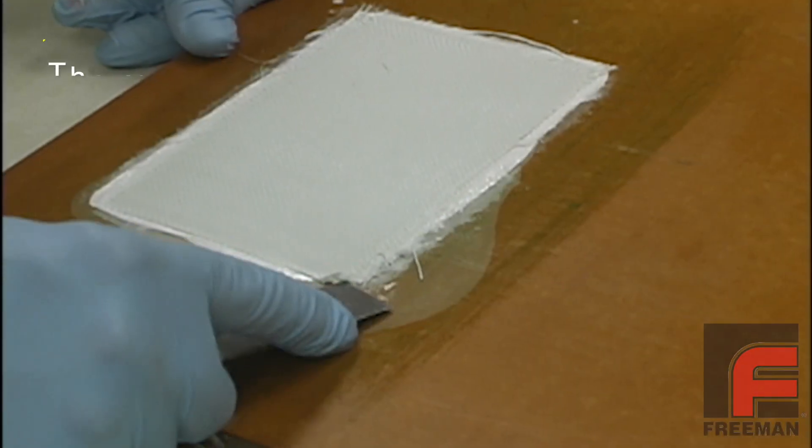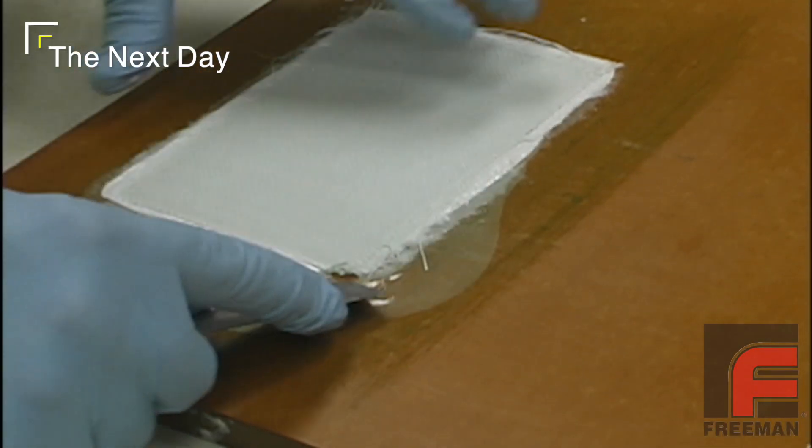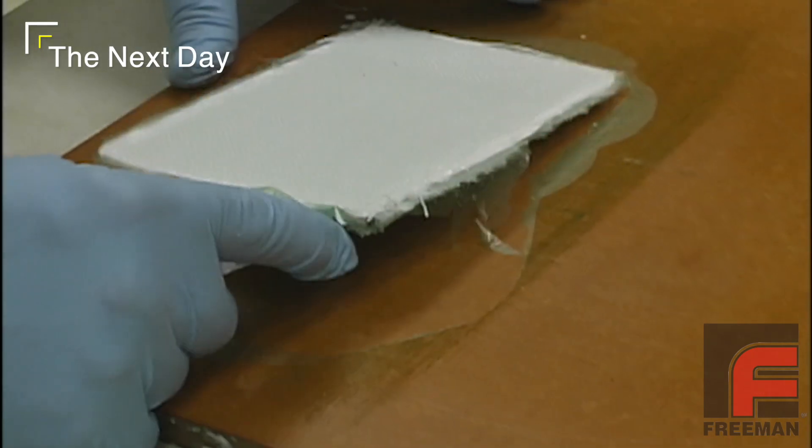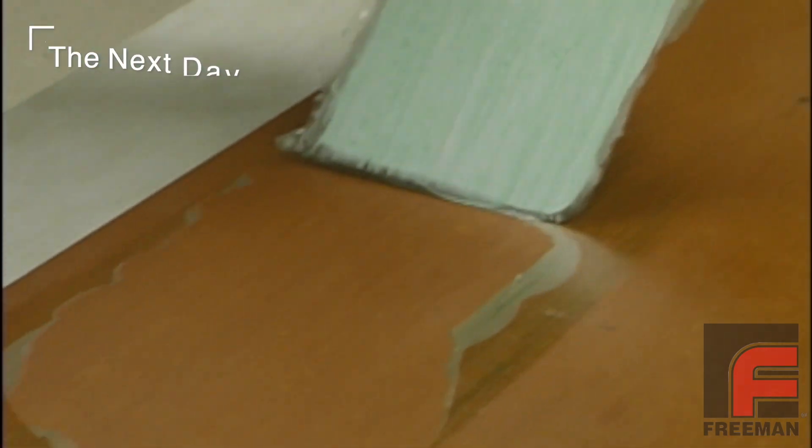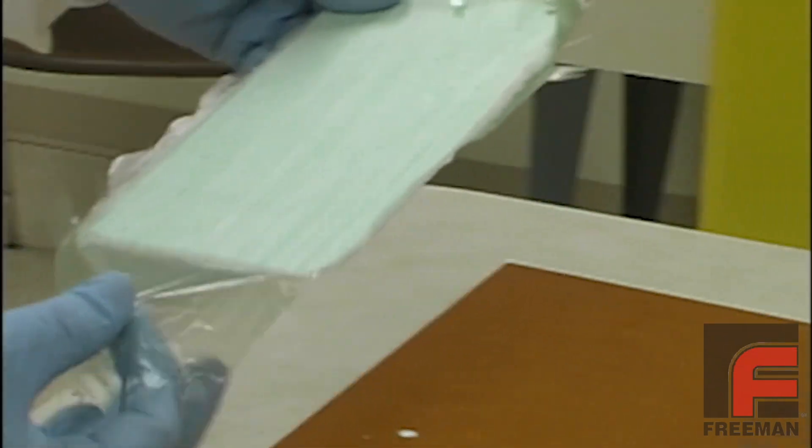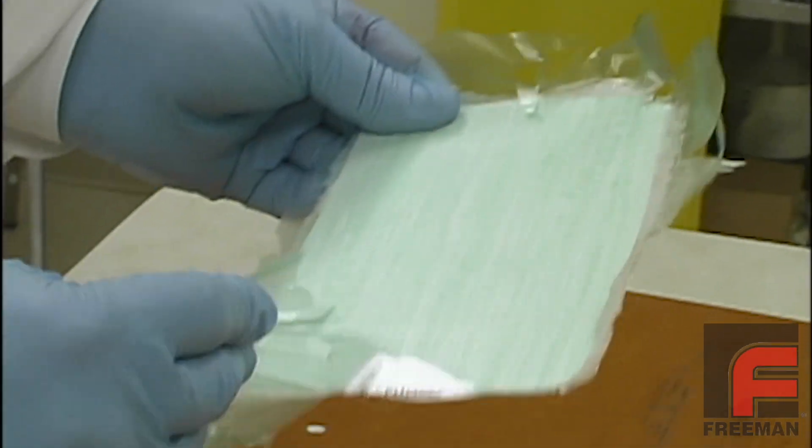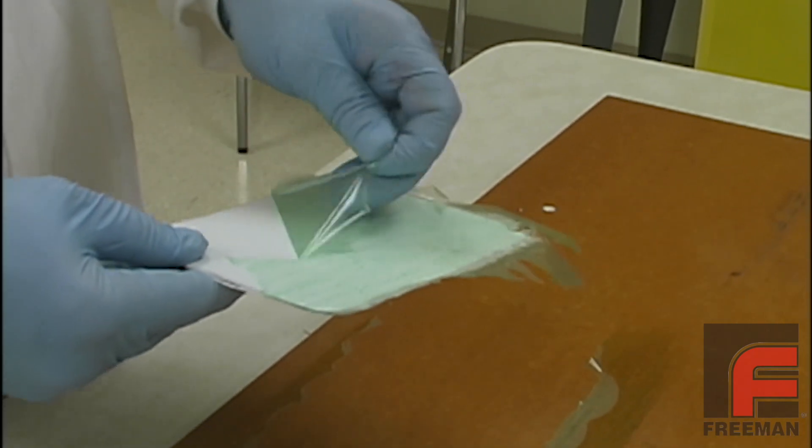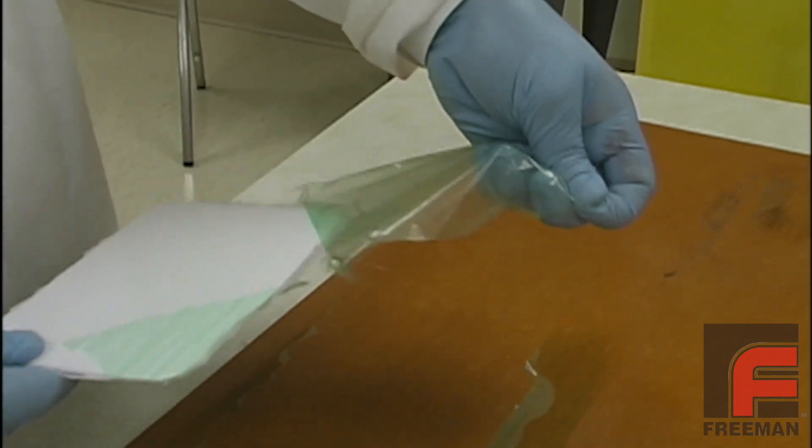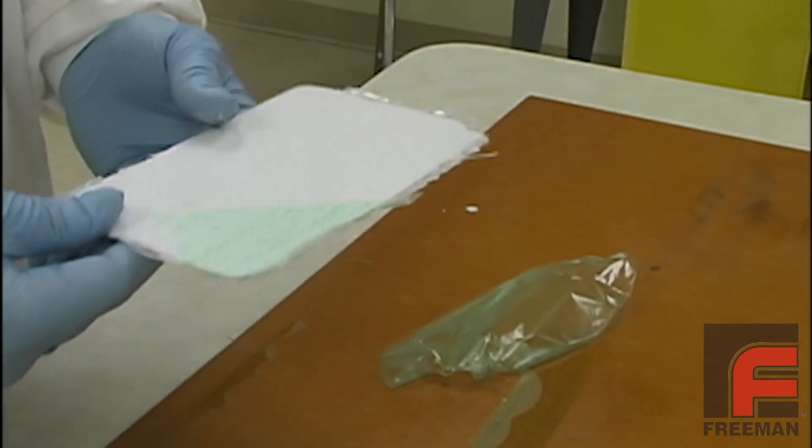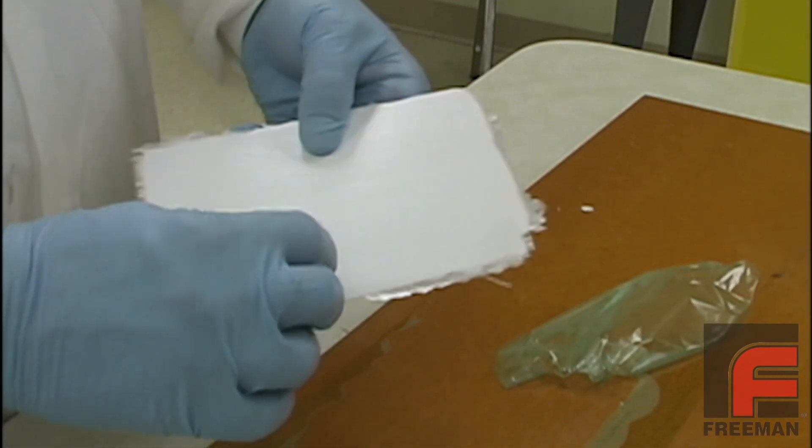To demold our tool, we are simply wedging a putty knife under the tool and gently lifting. Notice the PVA film that we had applied to the board before the surface coat. Most of this film can be peeled off with your fingers, and since the PVA is water-soluble, you can wash off the rest to finish your tool.